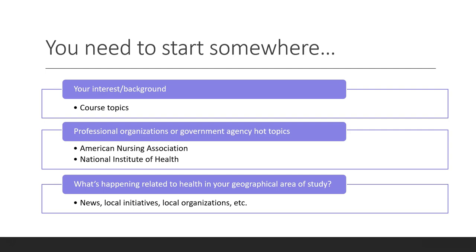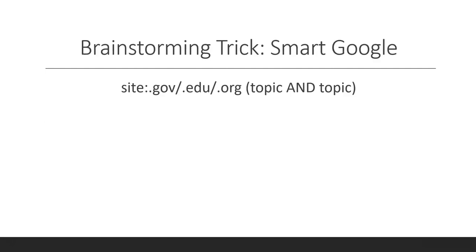Still not sure? Another approach would be to look at news sources in the geographical area in which you are interested. Most of this work is done via Google or Articles Plus on the library's homepage. I'm going to share a trick with you — something I call Smart Google. Because first steps of research are often on Google, there are ways to search Google in a smart way. Also, you can find a lot of legitimate information openly on the web, including government data and reports.